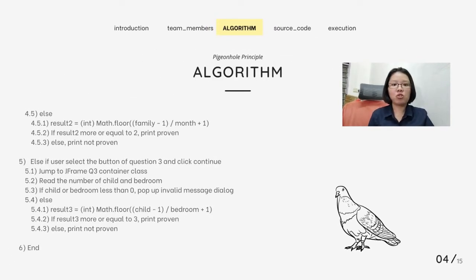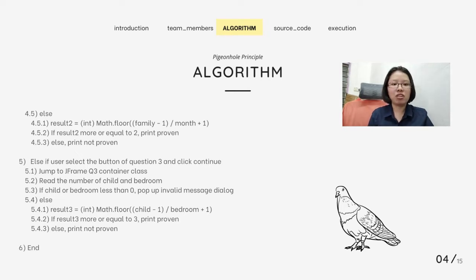Else, it will calculate result 2 using the formula given. If result 2 is more or equal to 2, it will print the proven statement. Else, it will print the not proven statement. Fifth, else, if the user selects the button of question 3 and clicks continue, it will jump to the Java frame question 3 container class and read the number of child and bedroom. If child or bedroom is less than 0, it will pop out the invalid message. Else, it will calculate result 3 using the formula given. If result 3 is more or equal to 3, it will print the proven statement. Else, it will print the not proven statement.